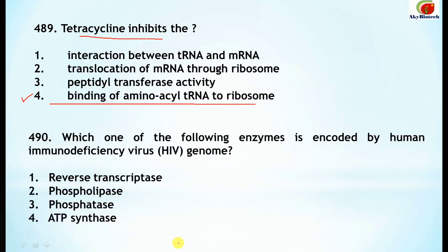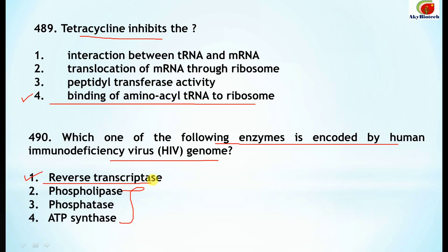Question 490: which one of the following enzymes is encoded by the HIV genome, that is the human immunodeficiency virus? The enzyme encoded by this genome is reverse transcriptase. Number 1 is the correct option.